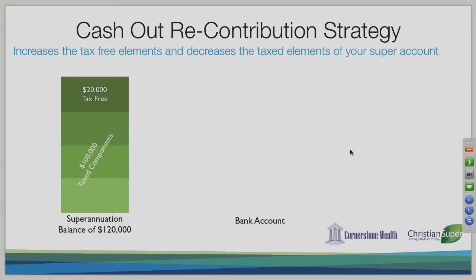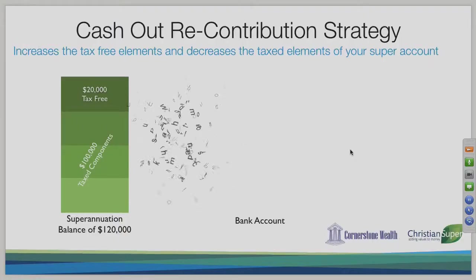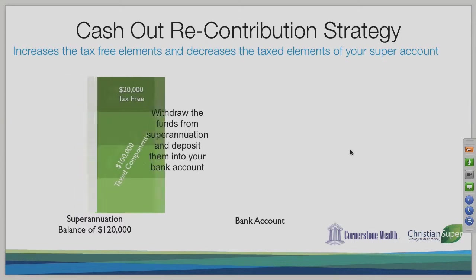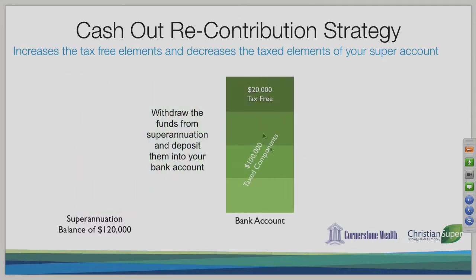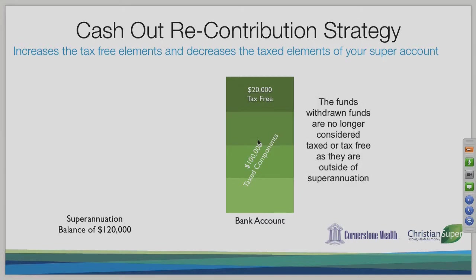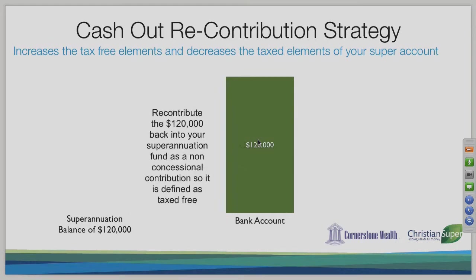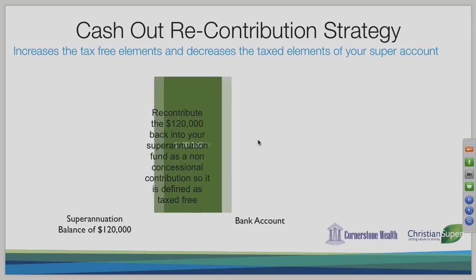To address this, we implement what's called a cash out recontribution strategy. If you've satisfied a condition of release and you're over age 60, you can withdraw all of your superannuation — sometimes leaving a small balance of $1,000. You withdraw all the funds and deposit them into your bank account. At that point the super components are lost; it's simply money in your bank account. You then contribute that $120,000 back into your superannuation fund as a non-concessional contribution.